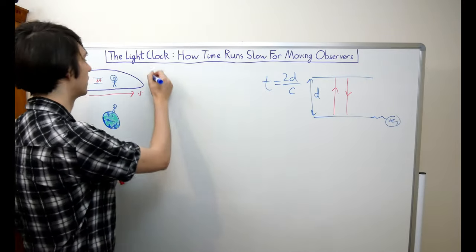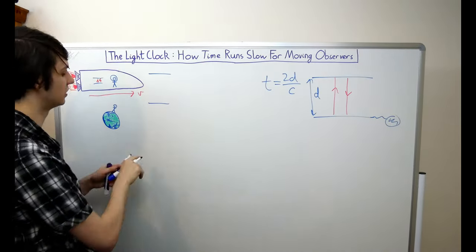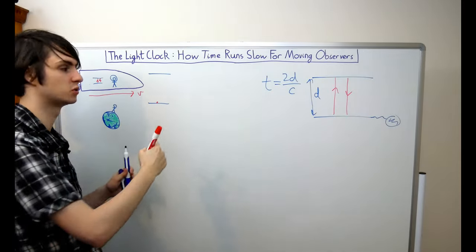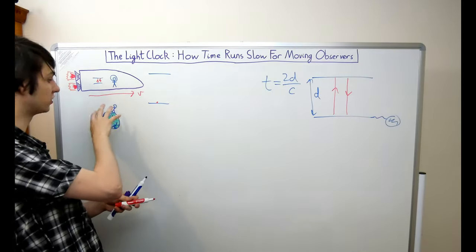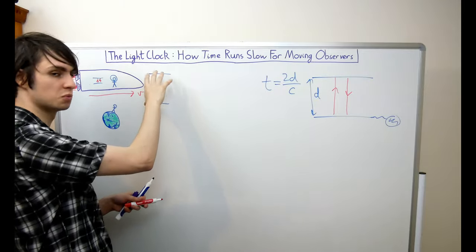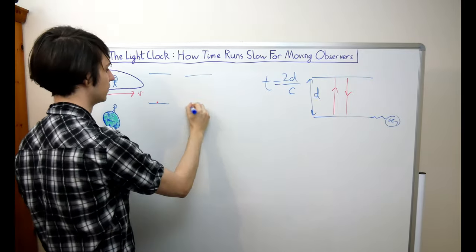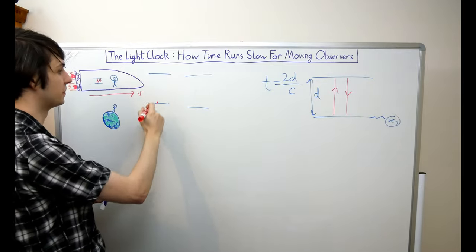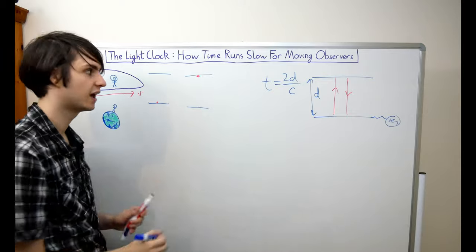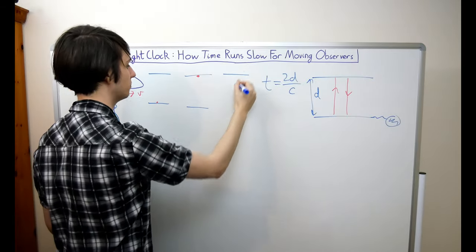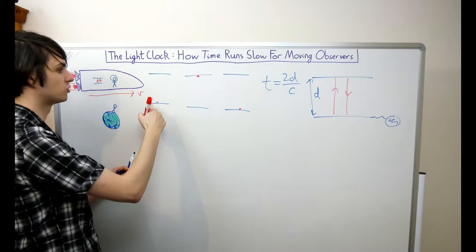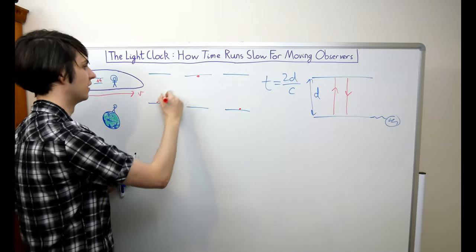Let's say that the mirrors are located here when the beam of light is first emitted from the bottom mirror. Now because the beam of light takes time to travel between the two mirrors, according to the observer on earth by the time the light beam reaches the top mirror the mirrors will have moved through space to a new position. So by the time the light beam has traveled to the top mirror the mirrors are located there, and then the same again for when the light beam travels down to the bottom mirror. So what the observer on earth sees is the light beam traveling along a diagonal path like this.